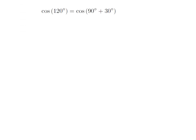As 120 degrees is equal to 90 degrees plus 30 degrees, so cosine of 120 degrees is equal to cosine of 90 degrees plus 30 degrees.